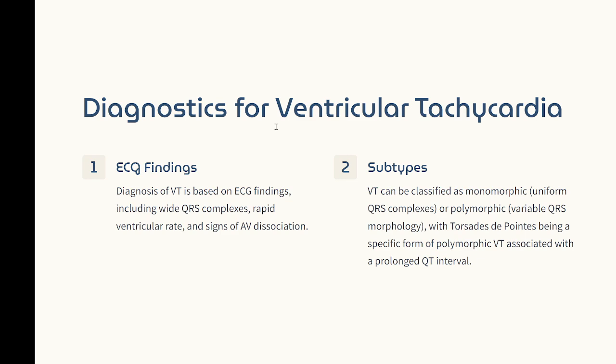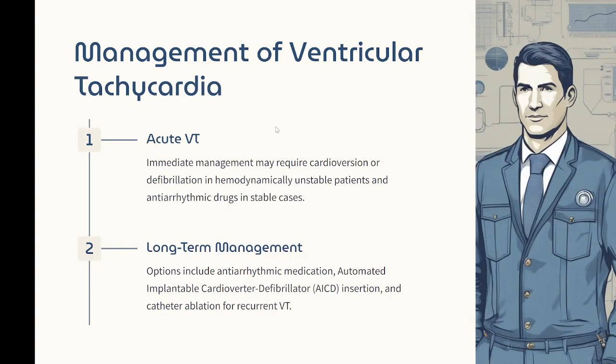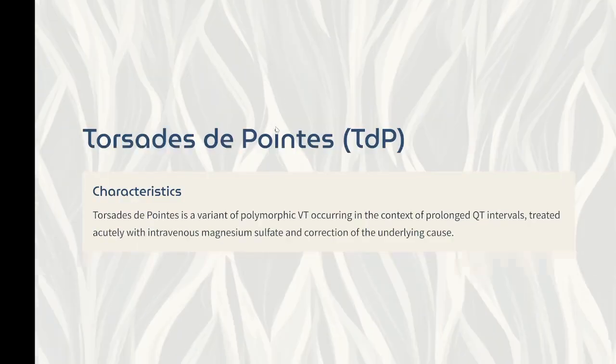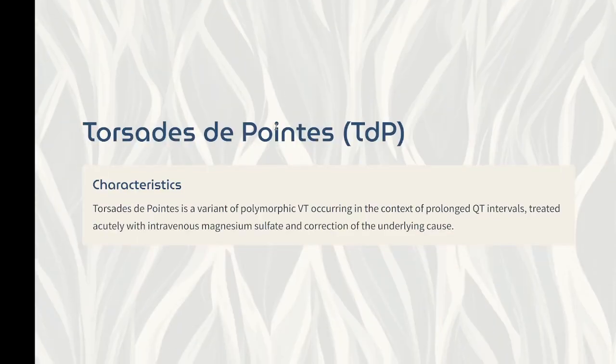Management — acute VT: immediate management may require cardioversion or defibrillation in hemodynamically unstable patients and antiarrhythmic drugs in stable cases. Long-term management options include antiarrhythmic medication, automated implantable cardioverter defibrillator (AICD) insertion, and catheter ablation for recurrent VT. Torsades de pointes (TDP), a variant of polymorphic VT in the context of prolonged QT intervals, is treated acutely with intravenous magnesium sulfate and correction of the underlying cause.